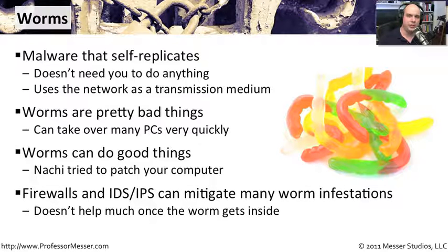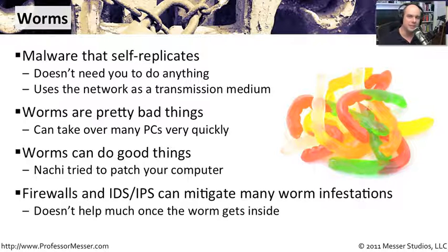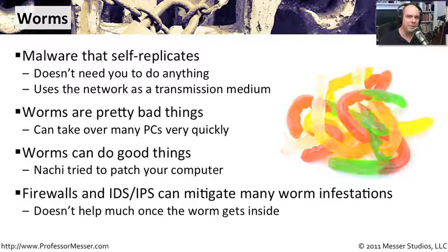One way many organizations stop worms from entering their environment is using a firewall or an intrusion detection or intrusion prevention system. Those will stop viruses, malware, spyware, and worms as they're coming in, right there at the gateway — at your connection to the internet. Generally, that's the only place the firewall or IPS is. You don't have multiple IPSs inside an organization, and if you do, they're in very limited areas.